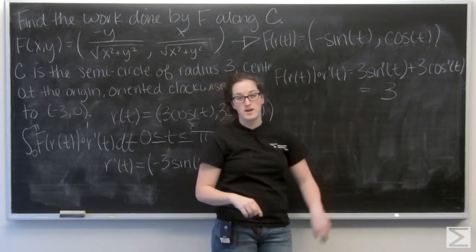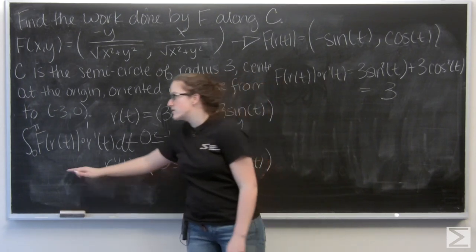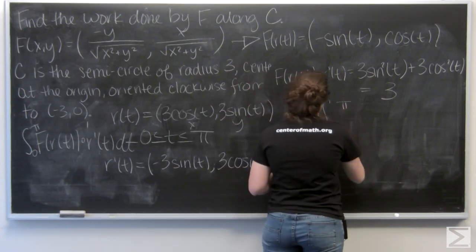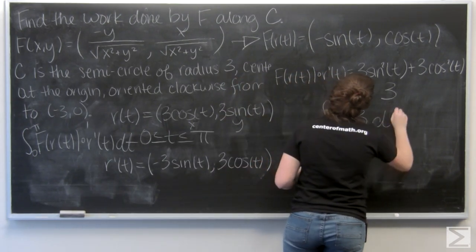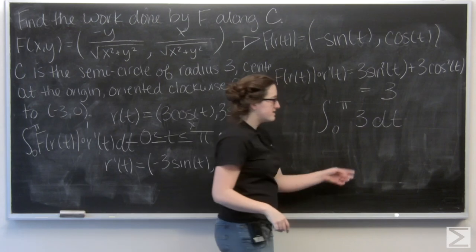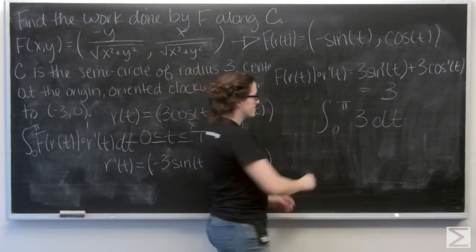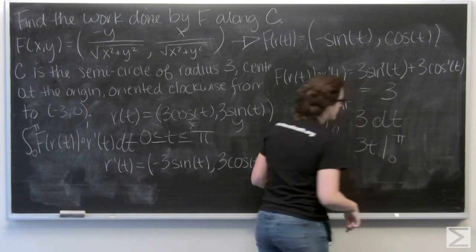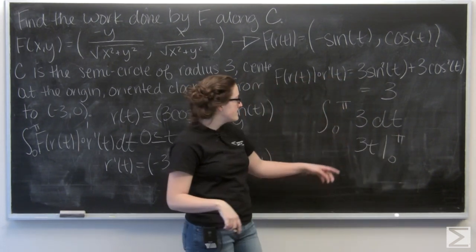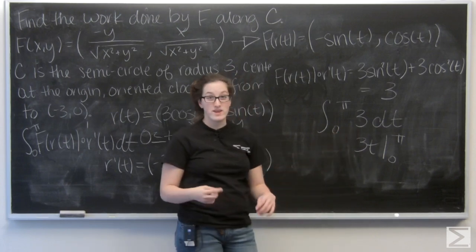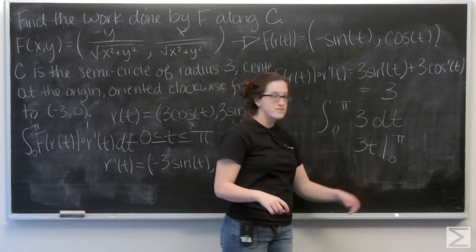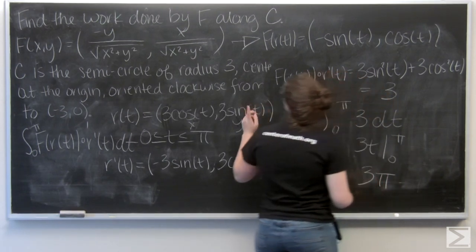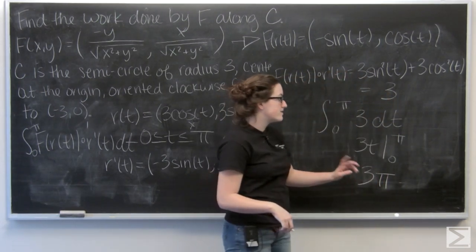And now I want to integrate that dot product with respect to t from 0 to π. So let's go ahead and set that up. Well, this one's pretty easy. The integral of 3 is going to be 3t. I want to evaluate that from t equals 0 to t equals π. Let's go ahead and plug in π. And I'm going to get 3π. And then plug in 0, and I get 0.